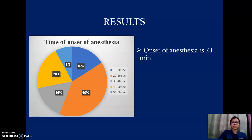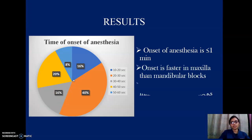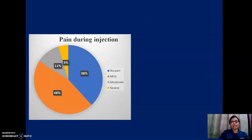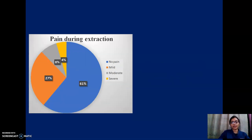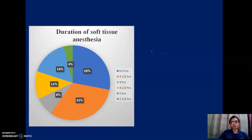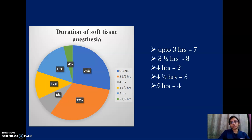The time of onset of anesthesia was less than one minute. Onset was faster in the maxilla compared to mandibular blocks, and faster in infiltration than in nerve blocks. Pain during injection was minimized in most patients, and pain during extraction was also minimized. The duration of soft tissue anesthesia was prolonged compared to non-buffered local anesthetic solutions, extending up to three hours.